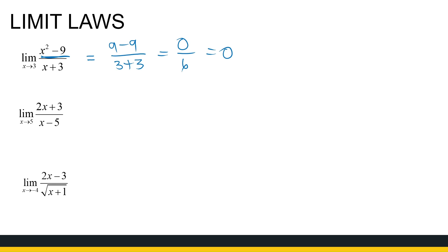Let's look at the next one: the limit as x approaches 5 of (2x+3)/(x−5). If I substitute in, my denominator will be 0. So you have to ask: can I do something with the numerator to cancel out that (x−5) in the denominator? In this example, I can't — there's nothing I can do to get rid of that x−5 in the denominator. So no matter what, it won't help, and that limit does not exist.